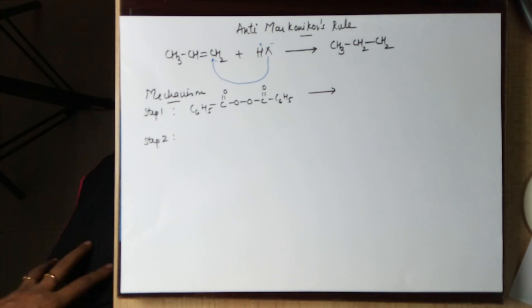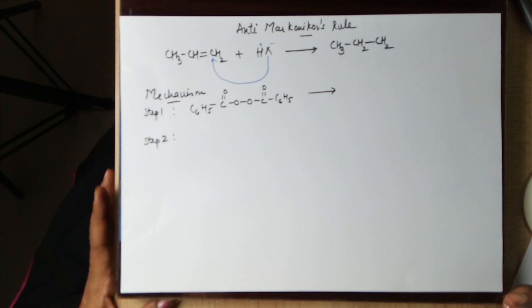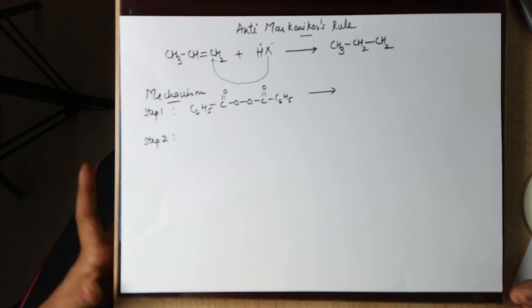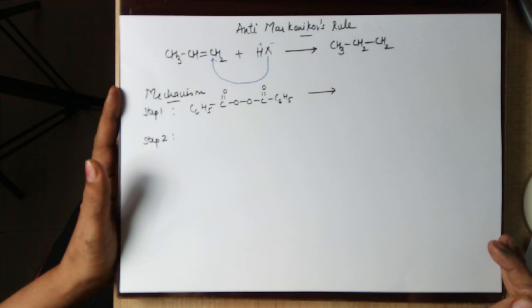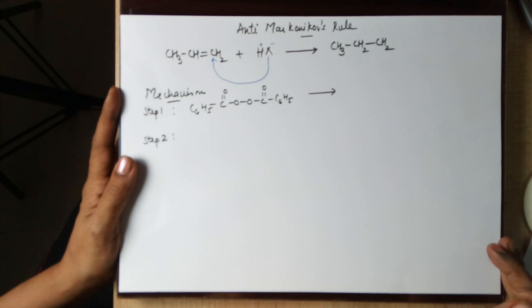Good afternoon viewers. In today's class we'll be doing the anti-Markovnikov's rule and its mechanism. The word anti-Markovnikov means it is opposite of Markovnikov's rule.